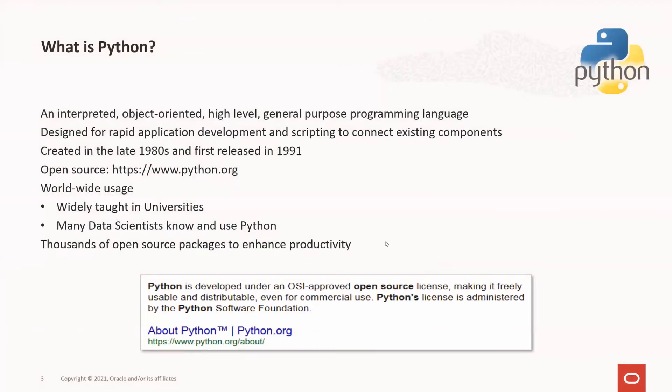In case you're new to Python, Python is an interpreted, object-oriented, high-level language. It's an open-source project designed for rapid application development and scripting to connect existing components together. Python also has a rich set of packages for data exploration, preparation, and machine learning — well over 200,000. Python is developed under an OSI-approved open-source license, making it freely usable and distributable, even for commercial use.